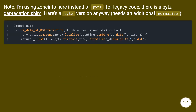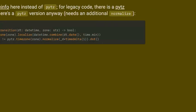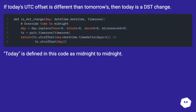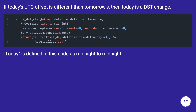Here's a pytz version anyway, which needs an additional normalize call. If today's UTC offset is different than tomorrow's, then today is a DST change day. Today is defined in this code as midnight to midnight.